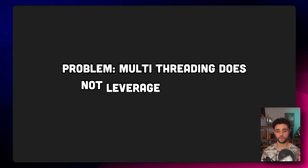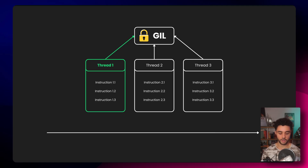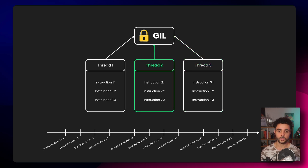So the GIL sounds great, but it has a main drawback: it prevents your multithreaded code from leveraging multicore parallelism. Here is how it works. In this example we have three threads, each wanting to execute three instructions, and we have the GIL. When the program starts, each thread will compete to acquire the GIL. In this example, thread one managed to get it first and executes its three instructions. After that it releases the GIL, letting another thread acquire it — in this case thread three, then thread two. So as you can see, there is no parallelism at all. Even with 10 cores, the sequence is thread one, then thread two, then thread three — the same performance as running all nine instructions using a single thread.